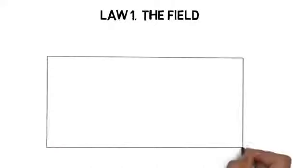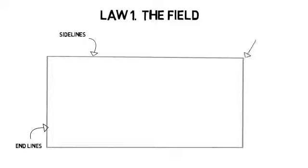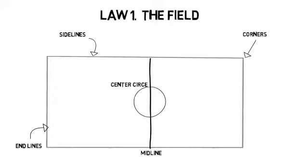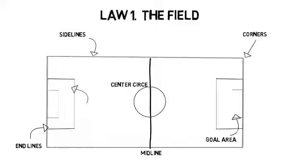Law 1: the field. The field is rectangular and consists of sidelines, end lines, corners, midline, the center circle, the goal area, penalty area, center spot, and of course the goals. The size of the field can be modified for smaller teams.